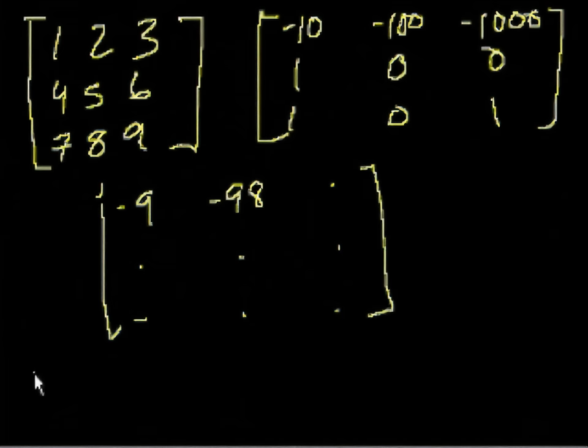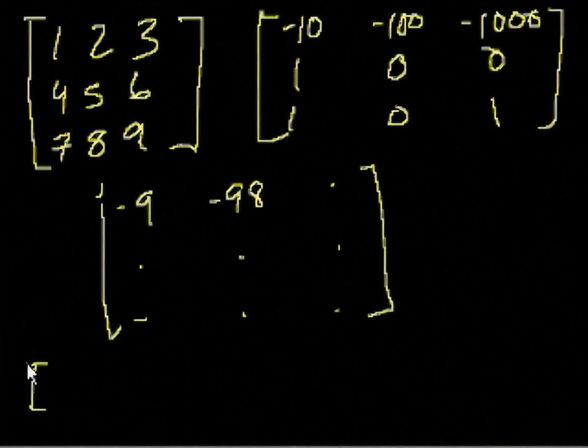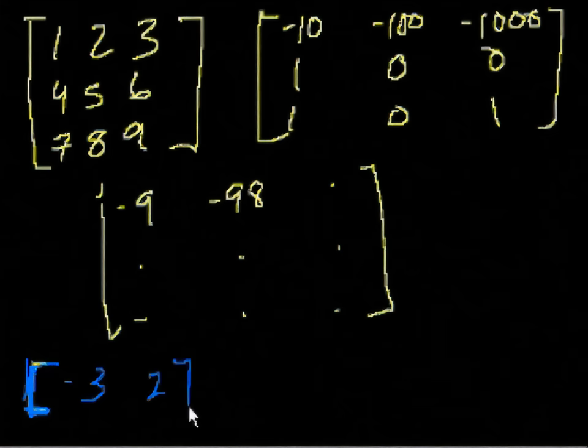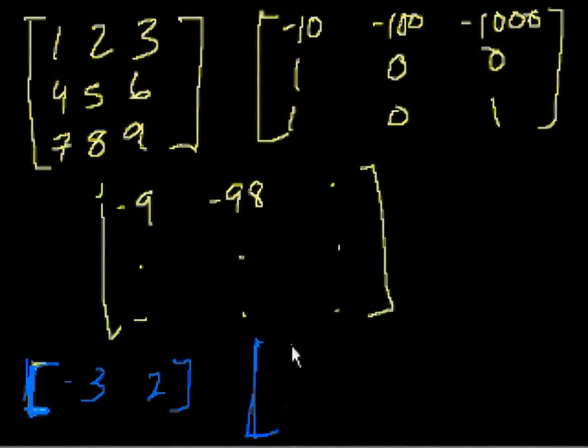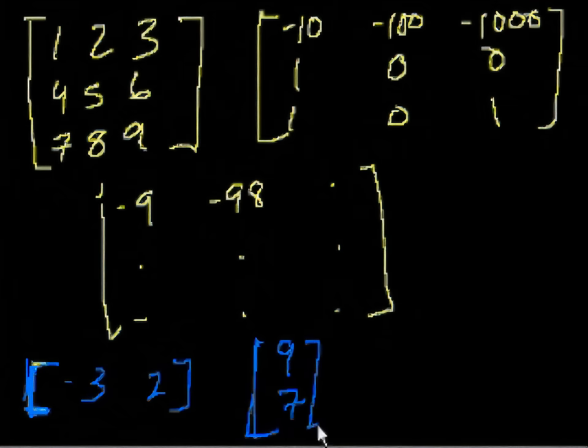But you could not add these two matrices. You could not add this matrix [-3, 2] to the matrix [9, 7]. And why can you not add them? Well, they don't have corresponding elements to add up. This is a 1 row by 2 column. This is 1 by 2. And this is 2 by 1. So they don't have the same dimensions, so we can't add or subtract these matrices.